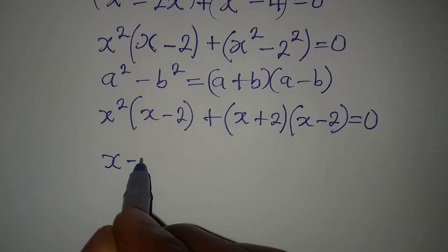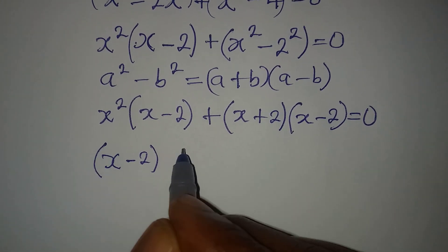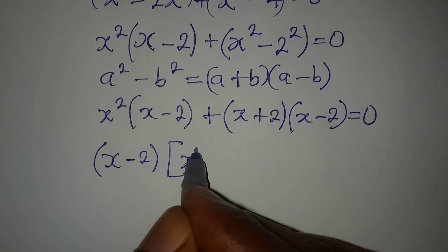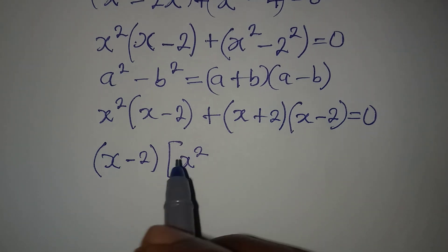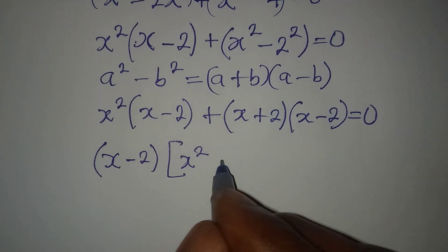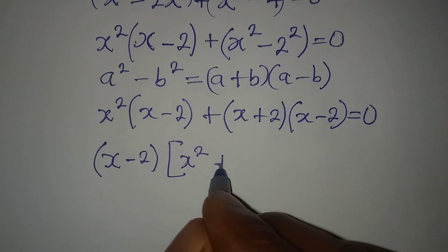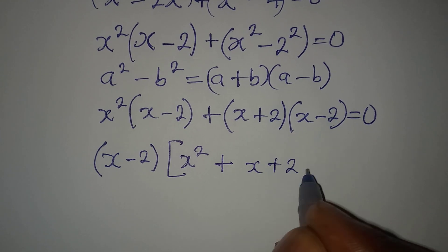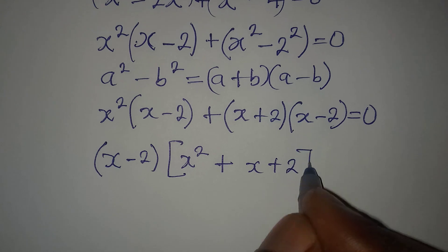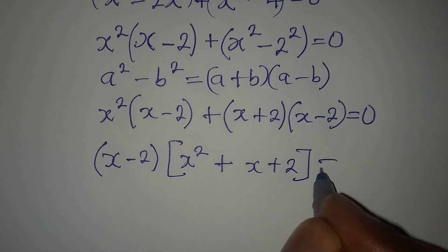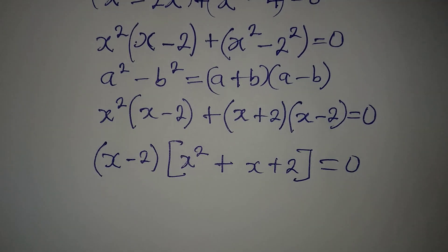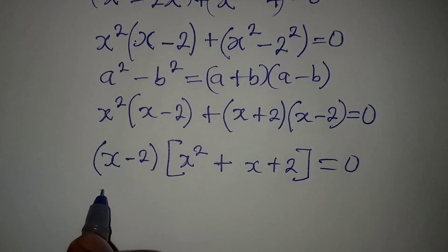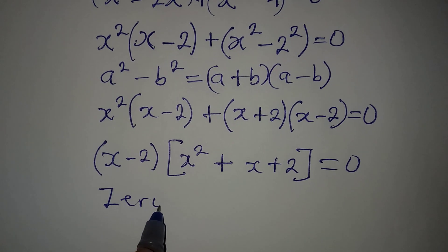So we have (x minus 2) times (x squared plus x plus 2) equal to 0. We can now apply the zero product rule.